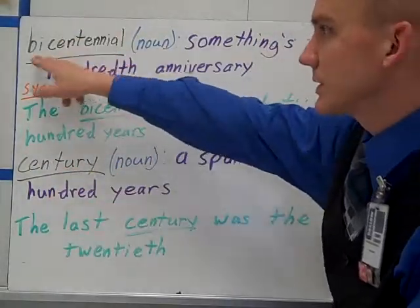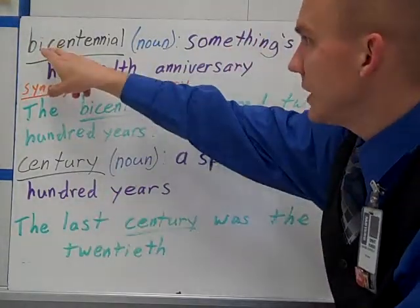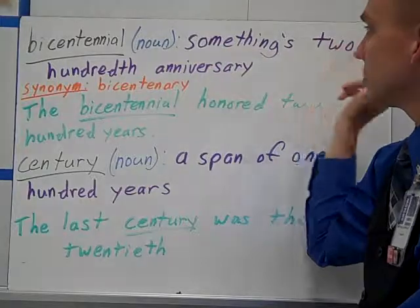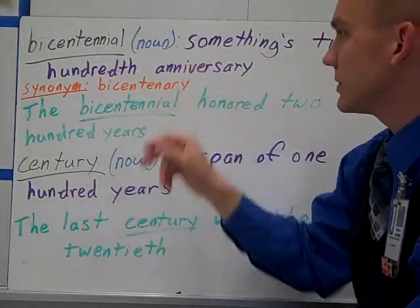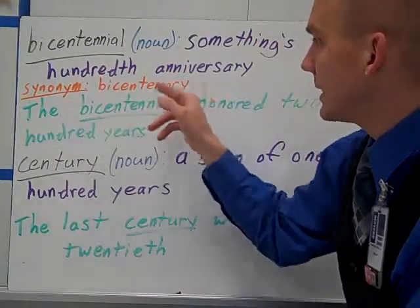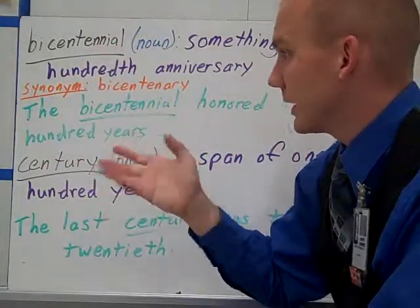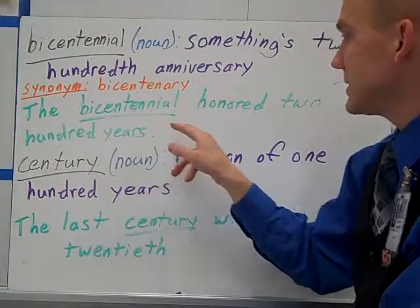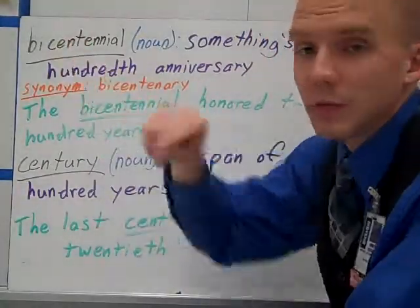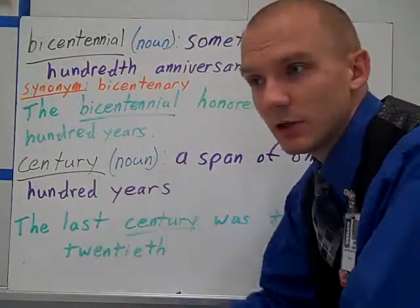Now, this is a little tricky one because it starts with BI, which means two. BI is two, but then you see CENT. Bicentennial. So bicentennial is a noun — it's something's 200th anniversary. The way we celebrate the 200th anniversary is the bicentennial. The synonym is bicentenary. The bicentennial honored 200 years. The CENT still means 100, but because you also have the prefix BI in combination, bicentennial means 200.